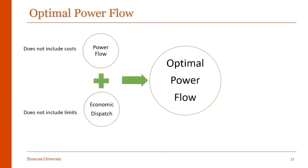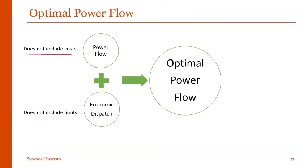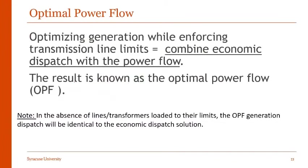As you have seen in the last lecture, optimal power flow is a combination of power flow and economic dispatch. The drawback of power flow is that it does not include any kind of costs — generator costs are not included in power flow. The drawback of economic dispatch is that it does not include line limits. Optimal power flow, on the other hand, optimizes generation while enforcing transmission line limits, making it a combination of economic dispatch and power flow analysis.